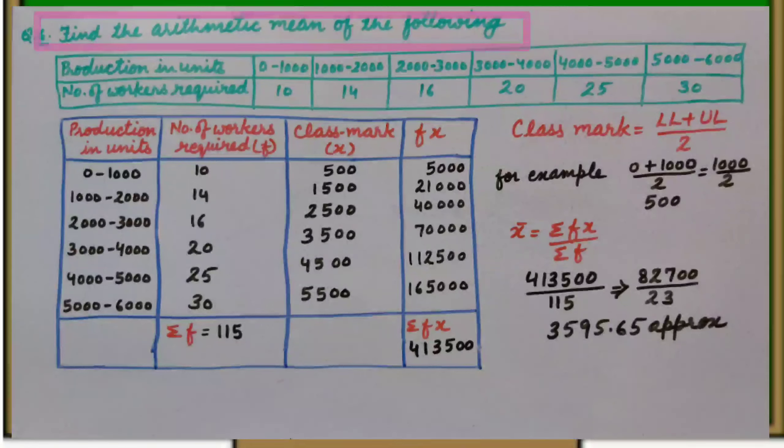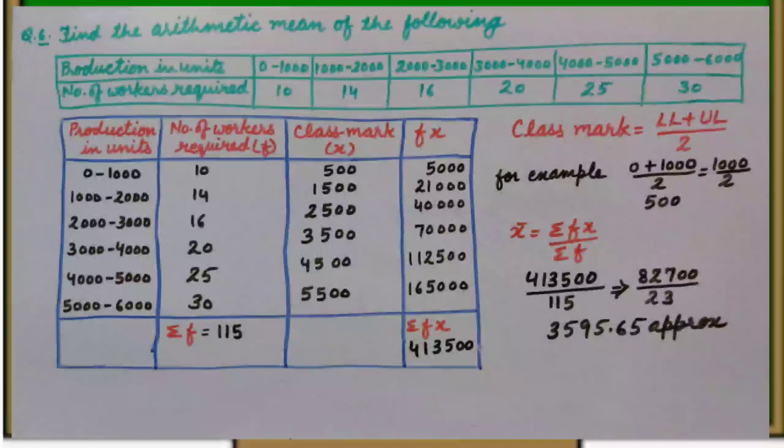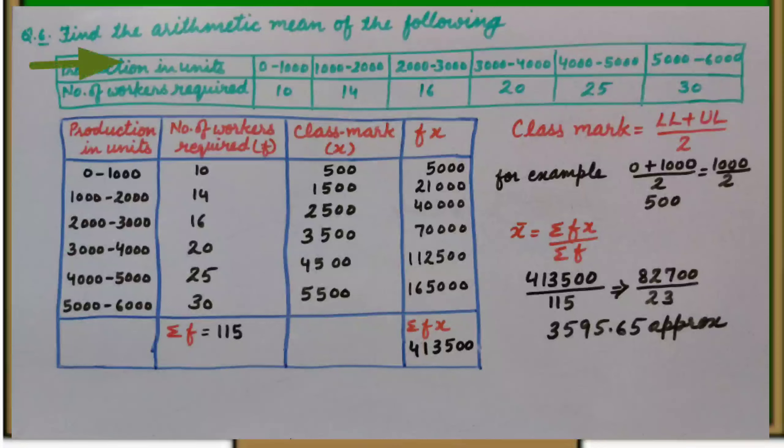Question number 6. Find the arithmetic mean of the following. Production in units is given as 0 to 1000, 1000 to 2000 and so on. Number of workers required 10, 14, 16, 20, 25 and 30.